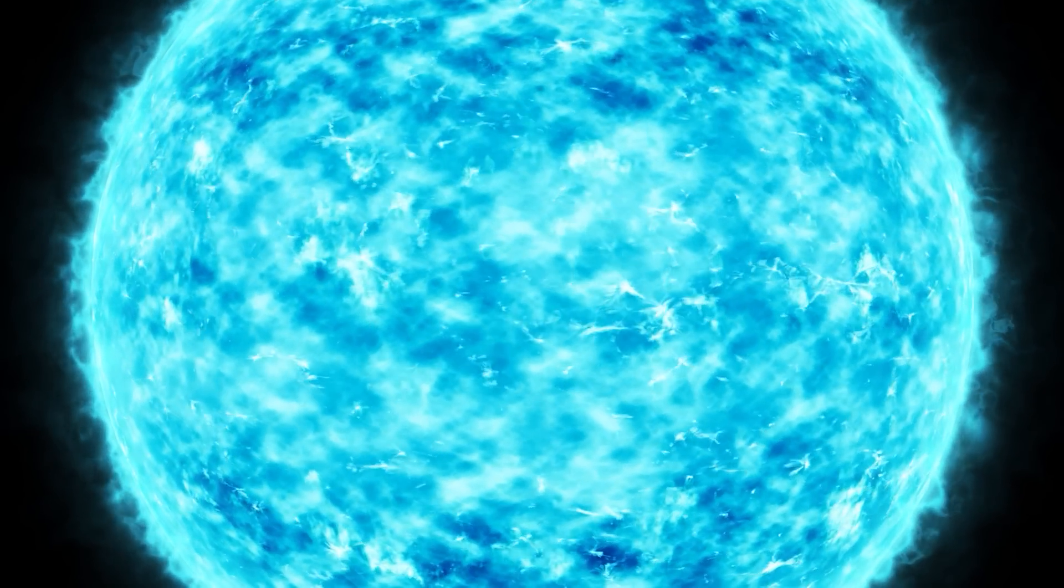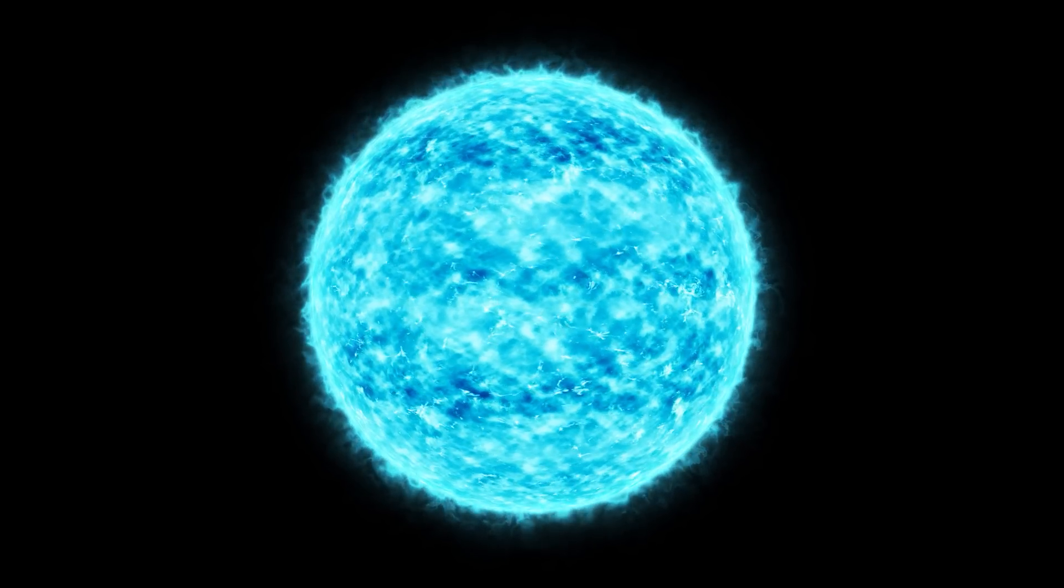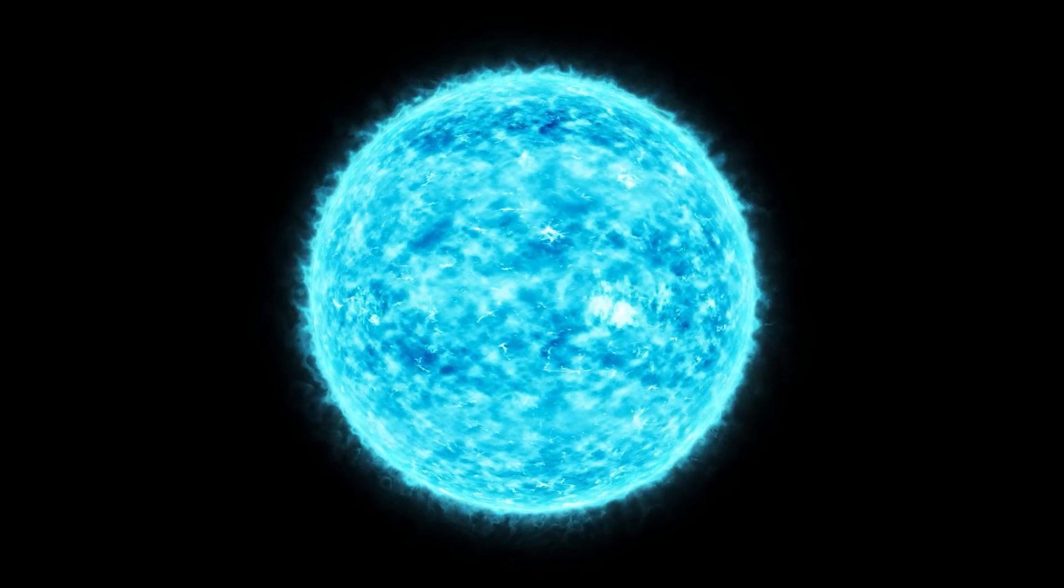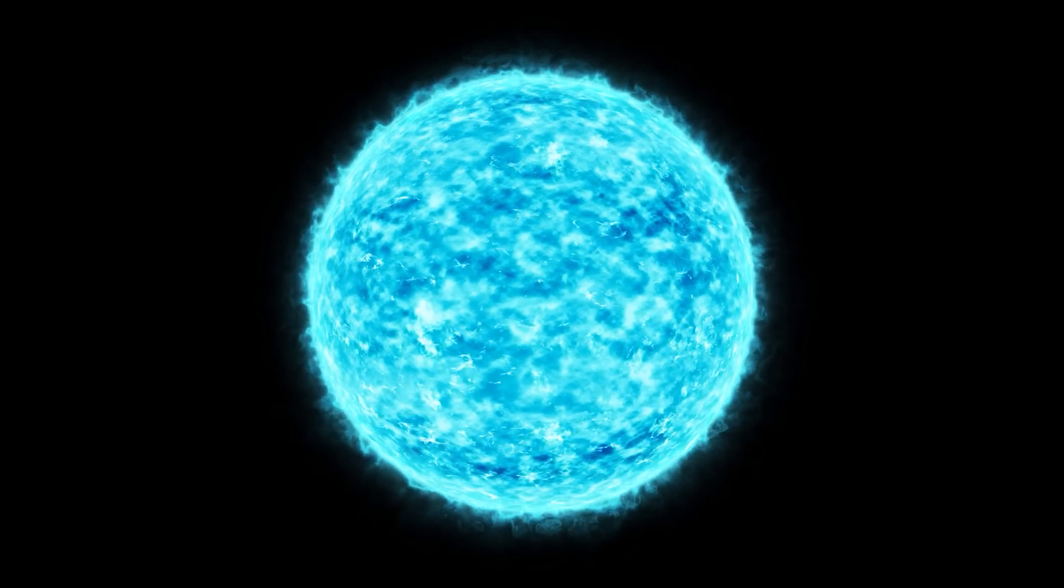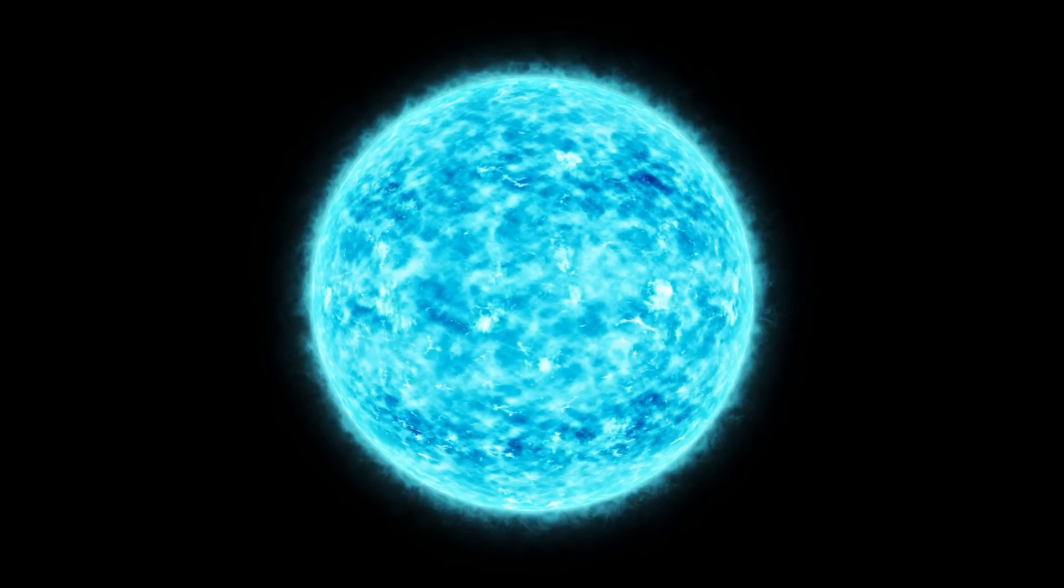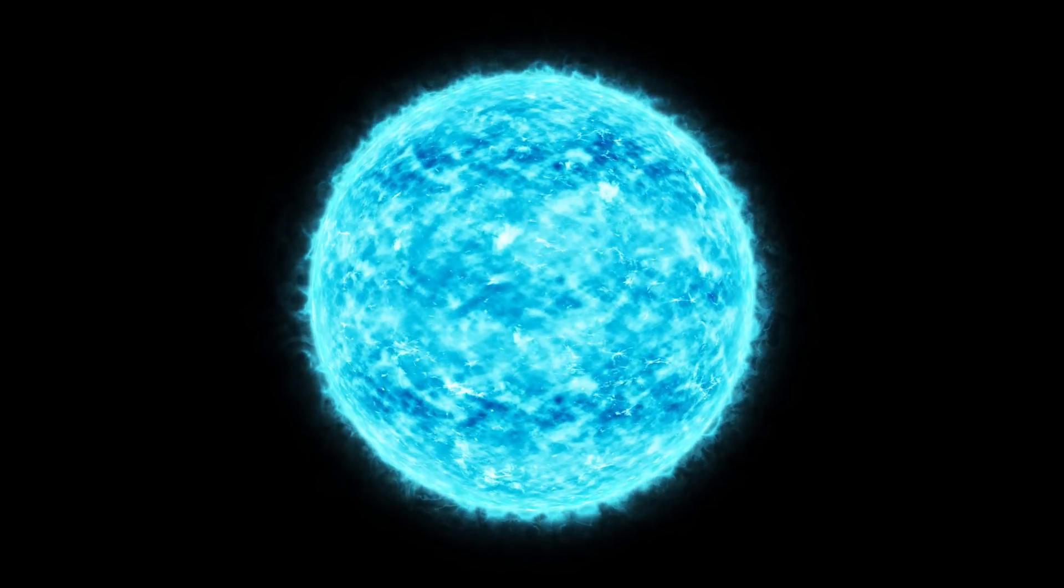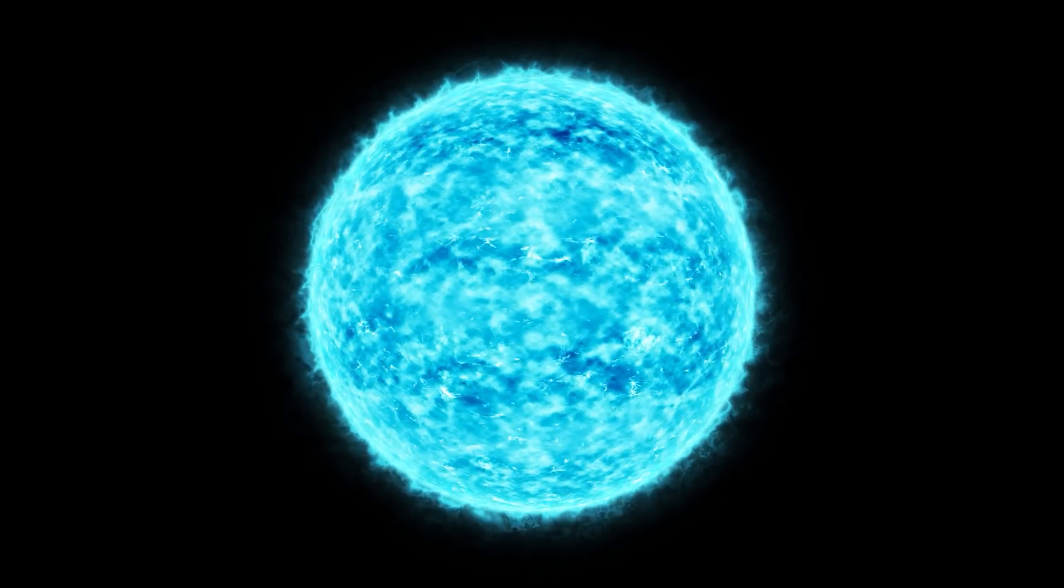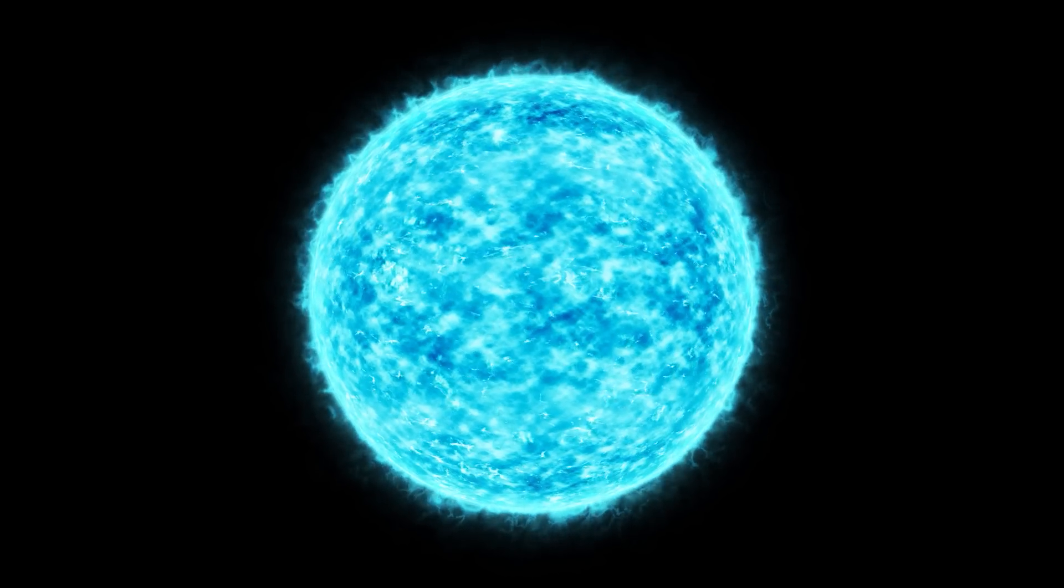But let's get back to our superstar, Kepler 11145123. What's astonishing is that despite being a gas giant like our Sun, it's even rounder. Its slow rotation rate reduces the flattening effect we see in other stars and planets.